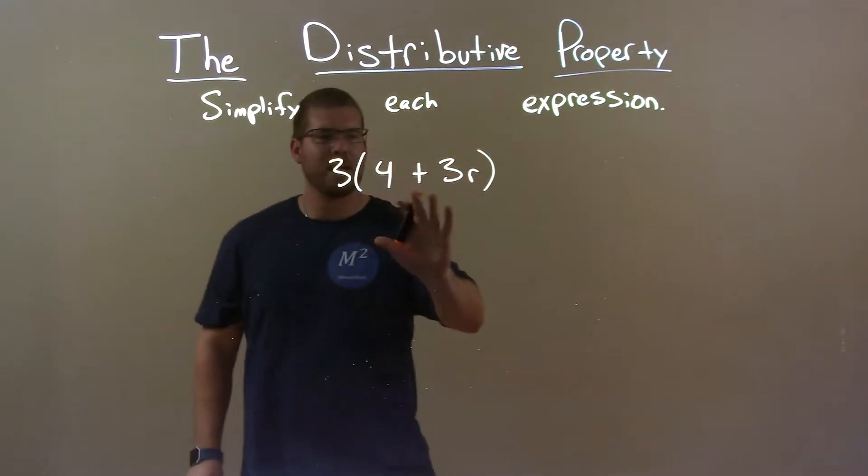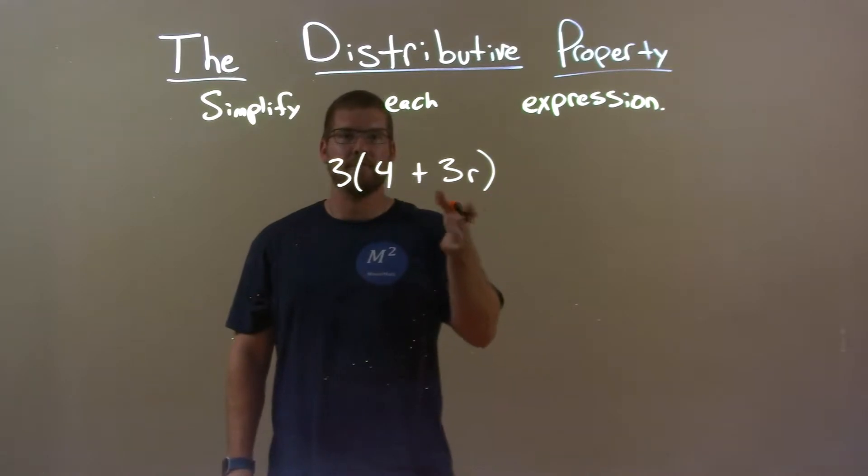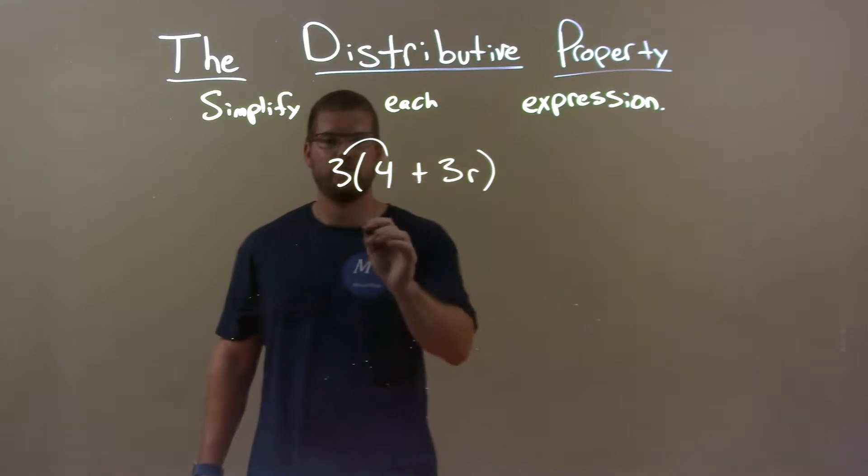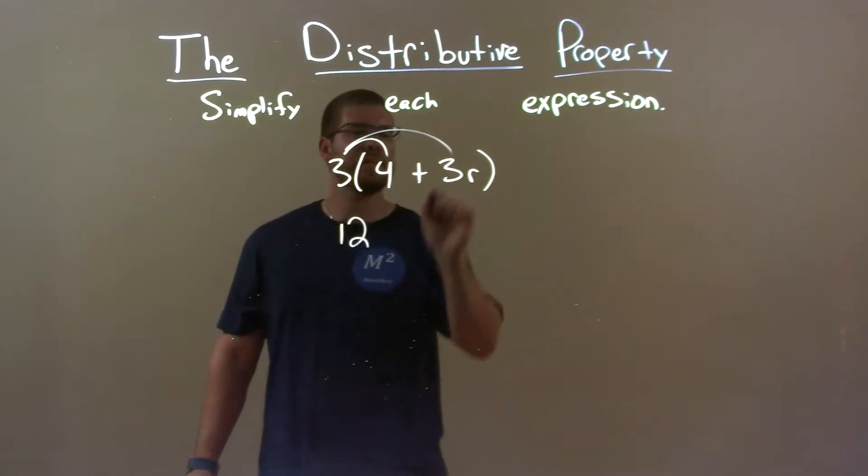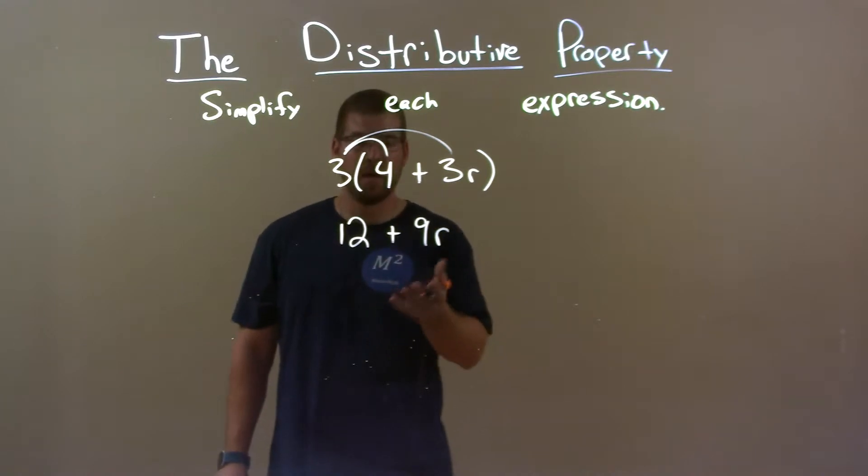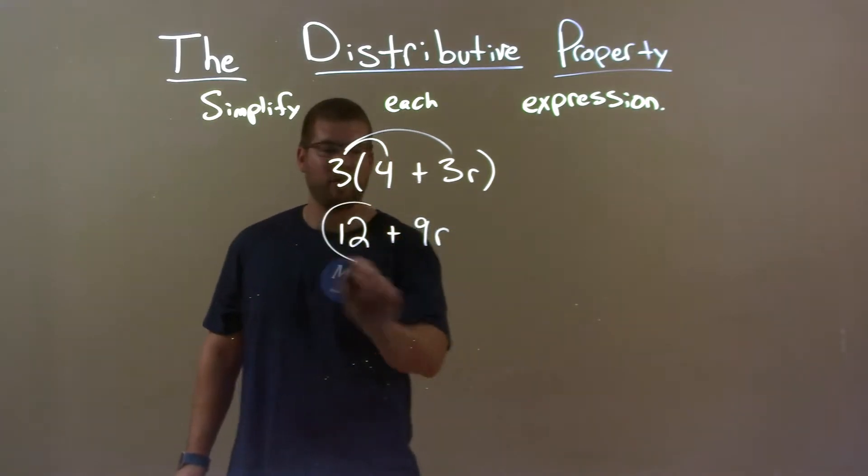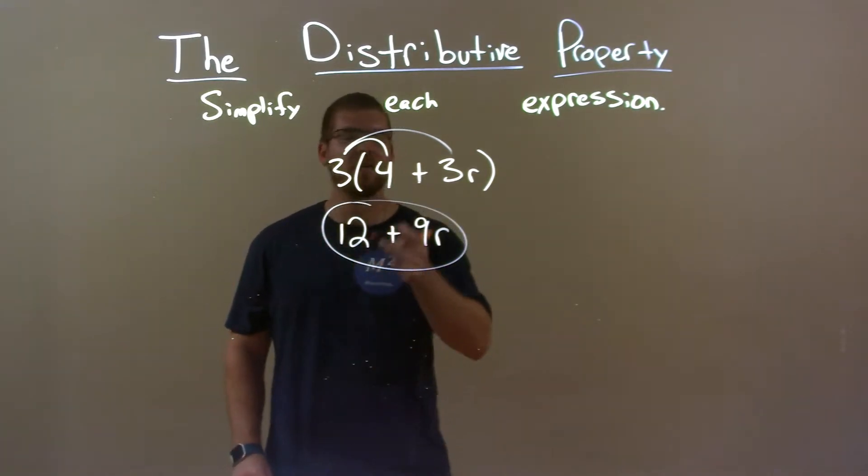First step, inside my parenthesis, can I simplify? No. Now, distribute the 3 across to both parts. 3 times 4 is 12, and 3 times 3r is 9r. And now we're done. We can't combine anything, so my final answer here is just 12 plus 9r.